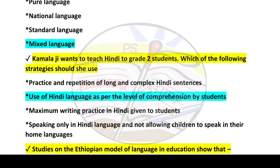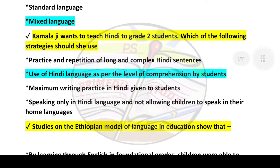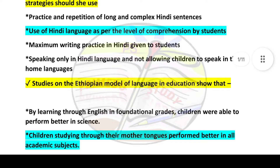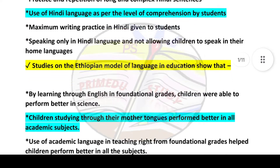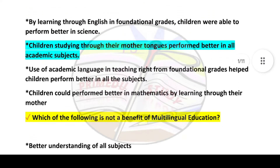The answer to the second question is option number two: use of Hindi language as per the level of comprehension by students. Next question: Studies on the Ethiopian model of language in education shows that — answer is option number two: children studying through their mother tongues performed better in all academic subjects.